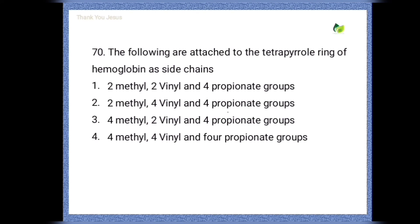The following are attached to the tetrapyrrole ring of hemoglobin as side chains. Options are: 2-methyl, 2-vinyl and 4-propionate groups; 2-methyl, 4-vinyl and 4-propionate groups; 4-methyl, 2-vinyl and 4-propionate groups; 4-methyl, 4-vinyl, 4-propionate groups. The correct option is the third one: 4-methyl, 2-vinyl and 4-propionate groups.